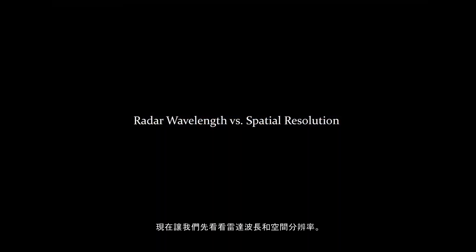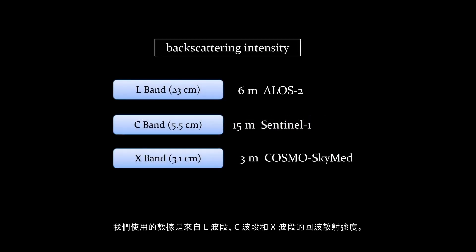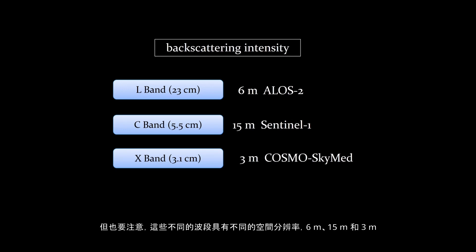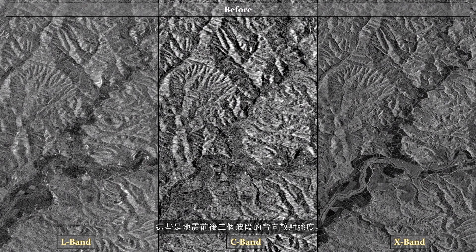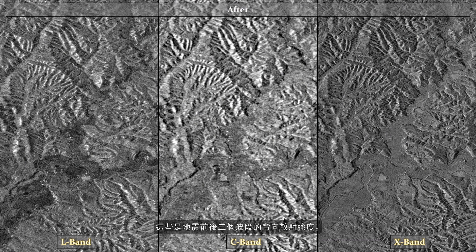Now let's first look at radar wavelengths and spatial resolution. The data used includes backscattering intensity from L-band, C-band, and X-band. Note that these different bands come with different spatial resolutions: 6 meters, 15 meters, and 3 meters respectively. These are the backscattering intensity images for the three bands before and after the earthquake.